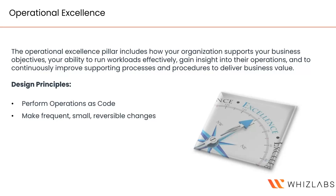The second design principle is to make frequent, small, reversible changes. Every change should not be a big-bang approach where you change everything at once. You should make small changes that you can easily reverse, and these should be frequent. For example, when AWS introduces a better storage plan, you would first test it in a small environment to confirm the benefits, then roll it out environment by environment.